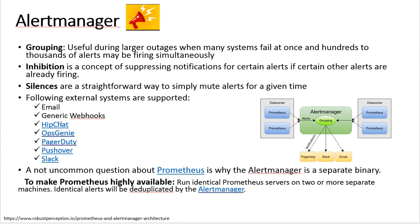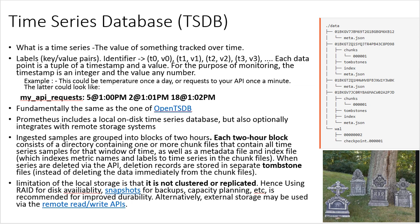A common question is why the alert manager is a separate binary from Prometheus. The reason is to make Prometheus highly available — you can run two identical alert managers across data centers, allowing each to send grouped alerts and notifications independently. Alert manager can also be integrated with email, HipChat, and other tools; since it is open source, you can integrate it with other systems as well.